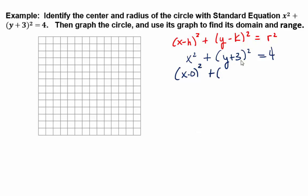Also, we have y plus something here, but that's not what the formula says. The formula says y minus something, but adding 3 is the same as subtracting what? Negative 3. Good. So (y - (-3))².